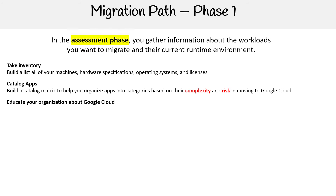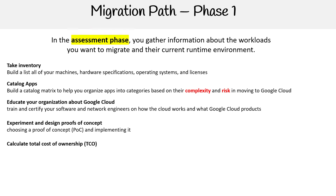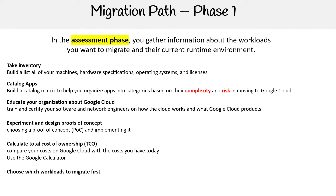Educate your organization about Google Cloud — train and certify your software and network engineers on how the cloud works and what Google Cloud products to use; maybe you could use this course to do that. Experiment and design proof of concepts: choose a POC and implement it. Calculate the Total Cost of Ownership (TCO) — compare your costs on Google Cloud with the costs you have today using the Google calculator. Then choose which workloads to migrate first.